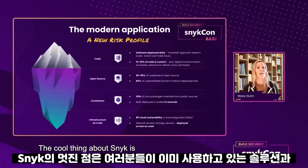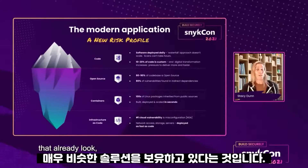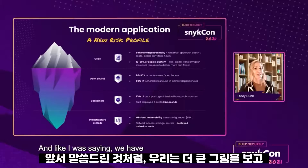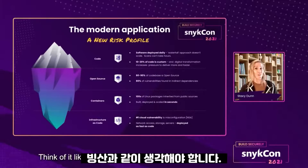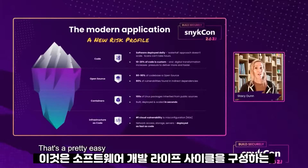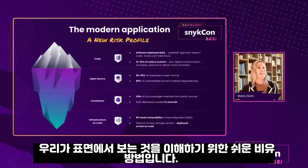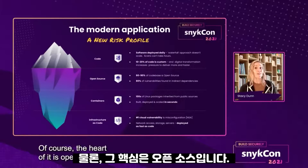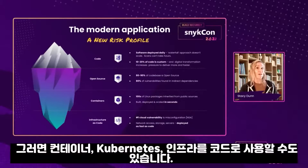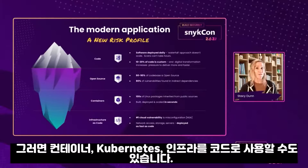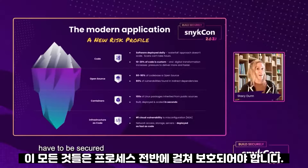The cool thing about Snyk is we have a platform of solutions that already look, act, smell, and even taste like the solutions that you're already using. We have to look at the bigger picture — think of it like an iceberg. What we see on the surface, such as our own proprietary code, isn't the only thing making up our software development lifecycle. The heart of it is open source, and then maybe you're using containers and Kubernetes and infrastructure as code. These are all individual pieces that have to be secured throughout the process.